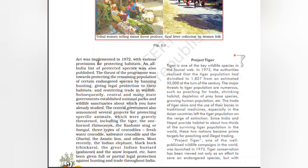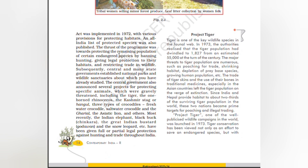The Indian Wildlife Act was implemented in 1972 with various provisions for protecting habitats. A list of protected species was also published. The thrust of the program was towards protecting the remaining population of certain endangered species by banning hunting, giving legal protection to their habitats, and restricting trade in wildlife.